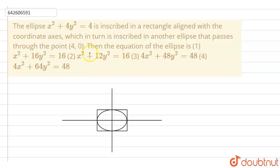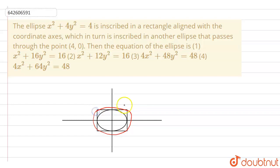Hello, welcome everyone. We have been given an ellipse that is inscribed in a rectangle. This is the ellipse represented by this equation, and it is inscribed in a rectangle with coordinate axes, which in turn is inscribed in another ellipse. So this rectangle is also inscribed in an ellipse — something like this. This is an ellipse inscribed in this rectangle and this ellipse.